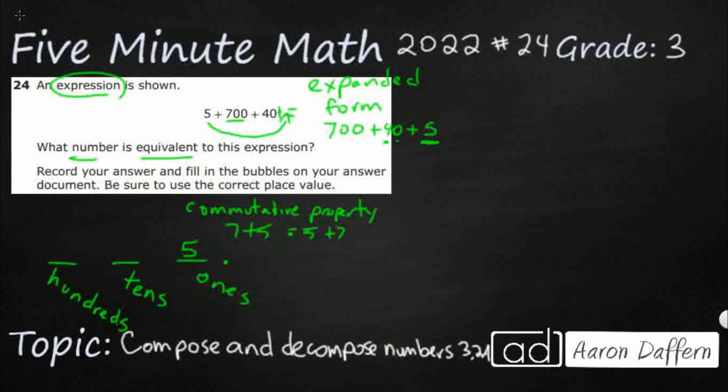That zero, the first one is the ones place. I'm not going to put anything there. There's already five in the ones place. But I can put a four in this tens place right here.